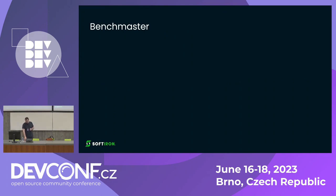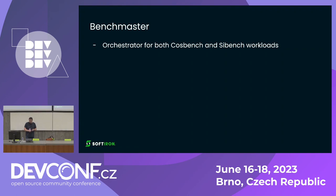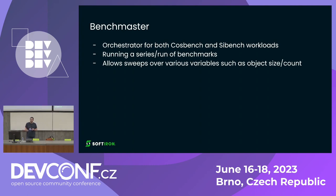Benchmaster is a small wrapper for SciBench — and also for CosBench, since we had a migration process. It's for running a series of benchmarks rather than just a single one. It allows you to provide a set of options to sweep over — for example, run a workload for 1K object size, then 4K, then 16K, and get all the answers back. It also writes results to Google Sheets, so all your workload data ends up in a spreadsheet that's easy to graph or analyze over time.